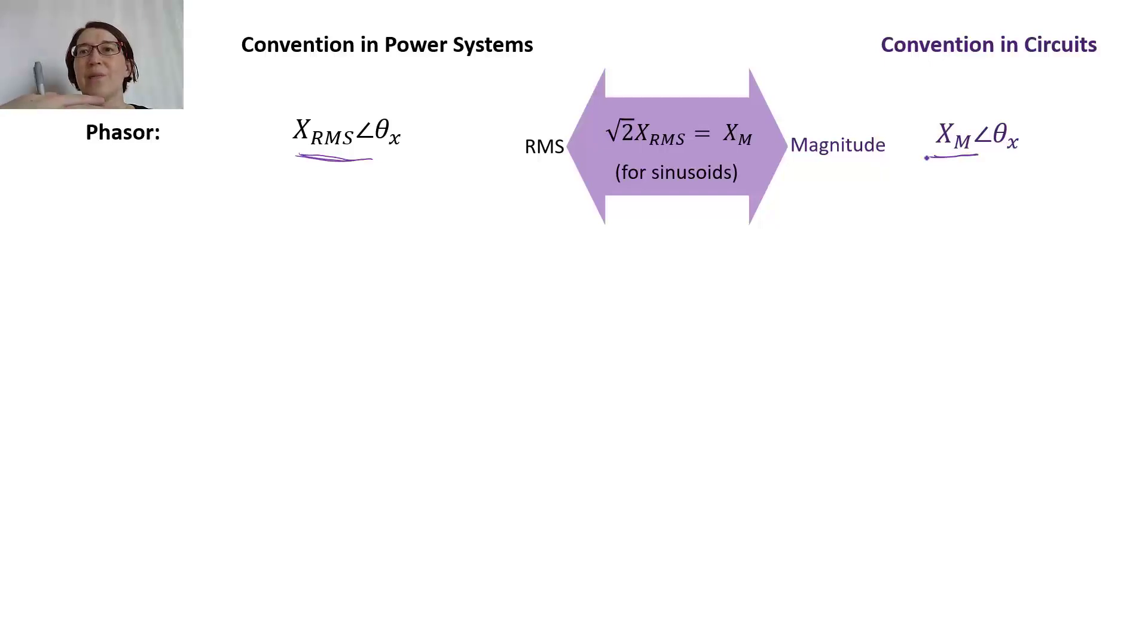The angle is going to be the same as the other one. So this is only slightly different. The difference between these two only when you're working with sinusoid. When you're working with a pure sinusoid, you know that the magnitude XM is equal to root 2 times the RMS value.